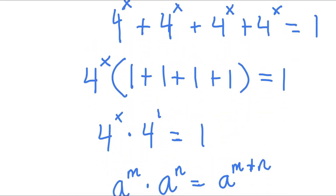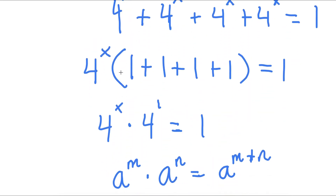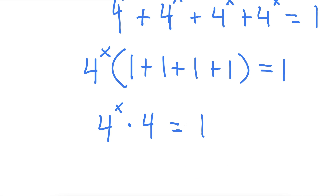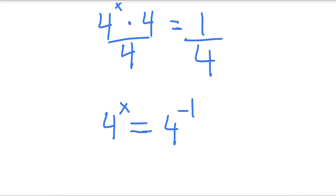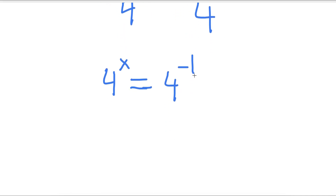Another method we could have used: we have 4 to the power of x times 4 is equal to 1, so we could divide both sides by 4. Now I have 4 to the power of x is equal to 1 fourth, which is the same thing as 4 to the power of negative 1. Since a to the power of m equals a to the power of n means m equals n, x is equal to negative 1.